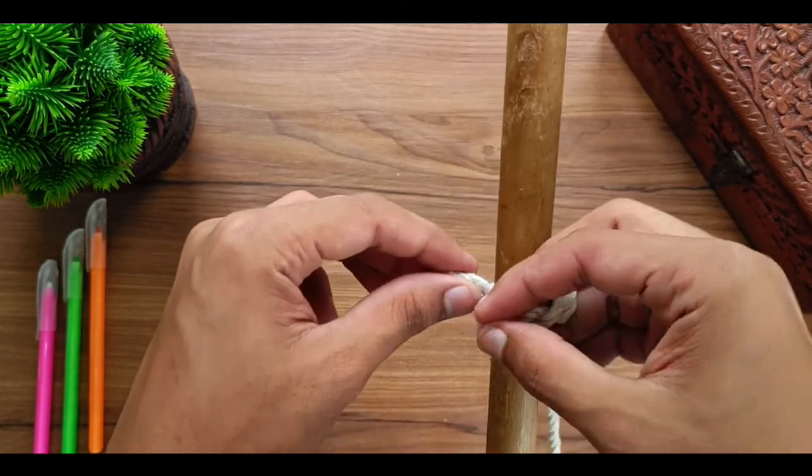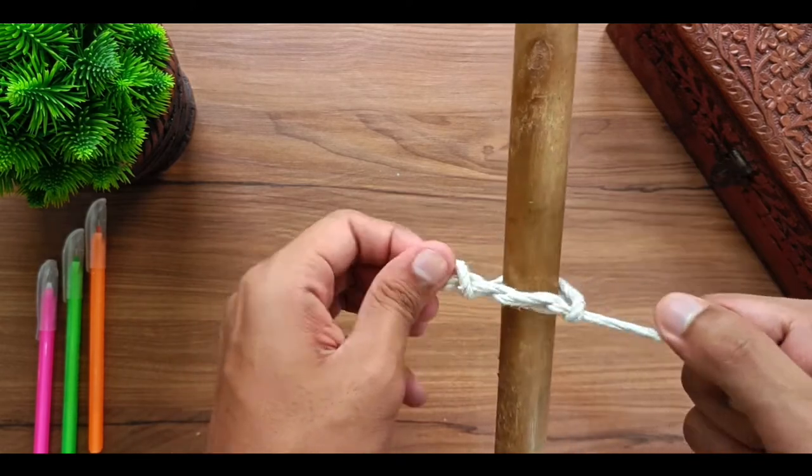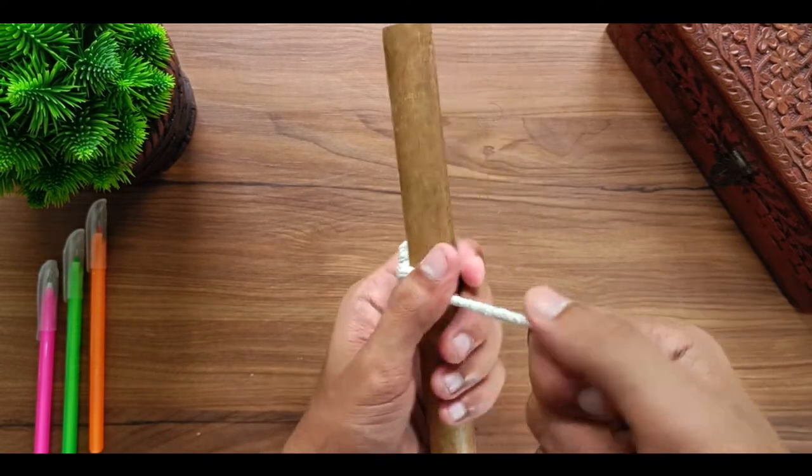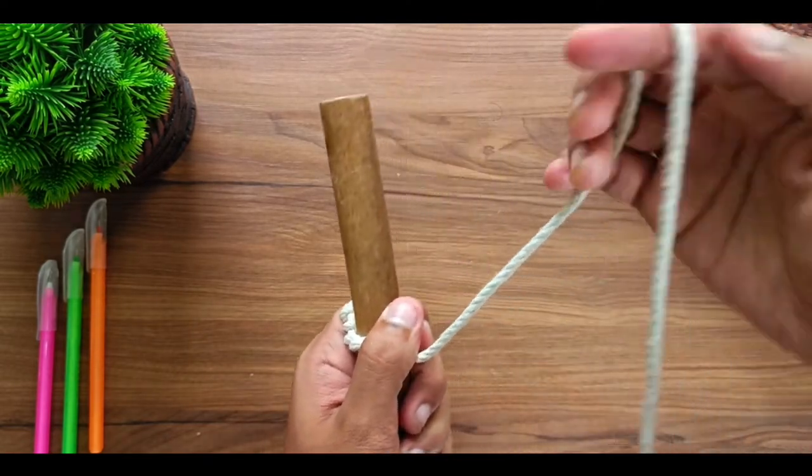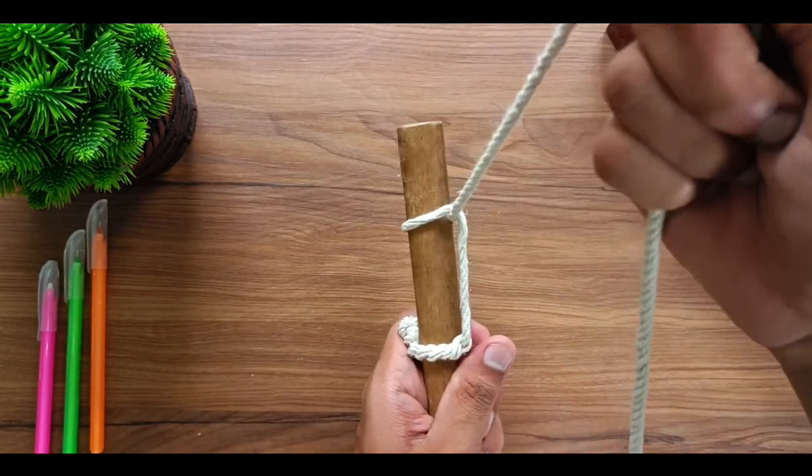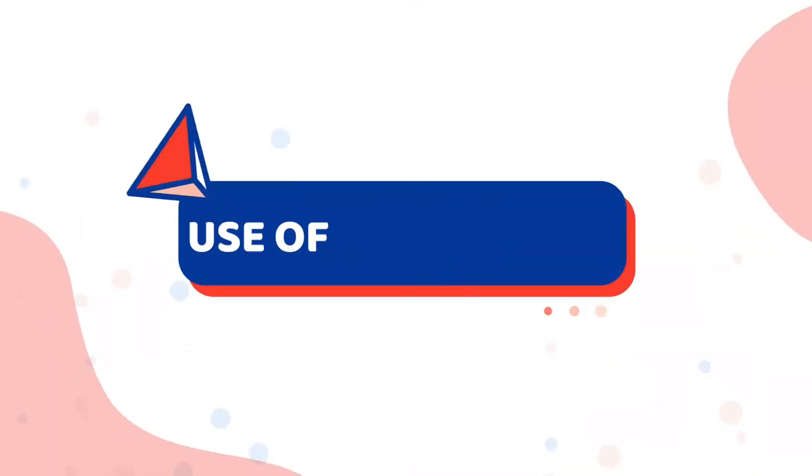One, two, and three. Tighten it, and a half hitch. So this is the killick hitch. Now let's check the uses of killick hitch.